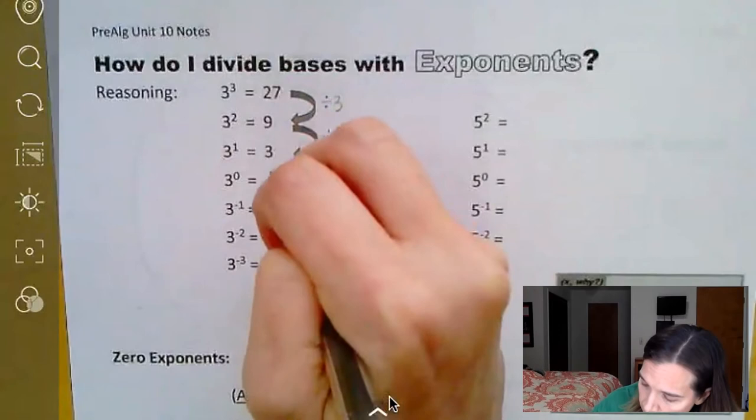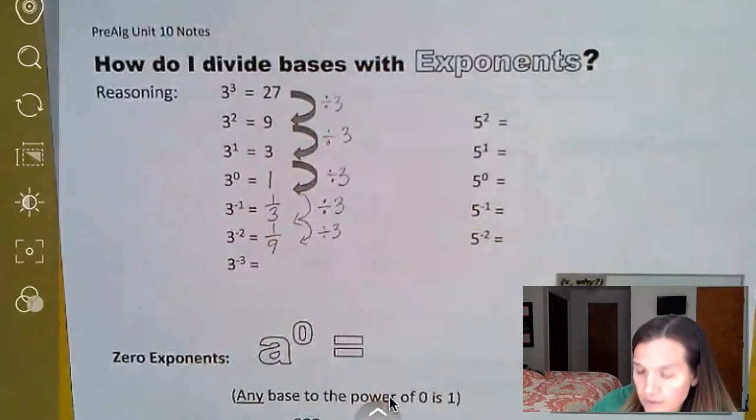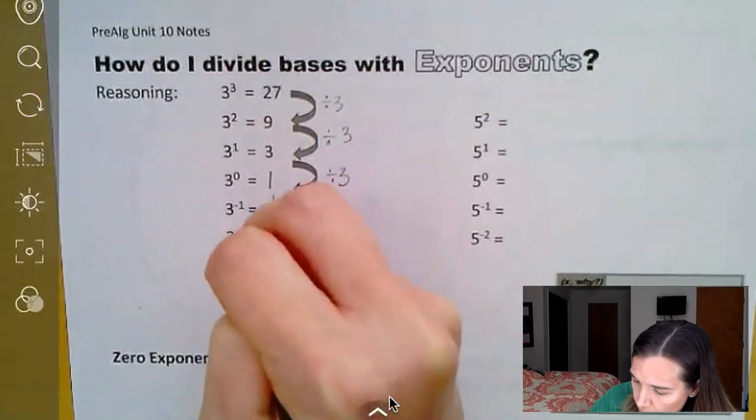And then we keep going. And we divide that by three, and we get one ninth. And if we did that again, we get divided by three, one twenty-seventh.